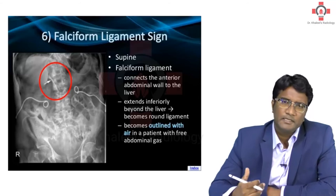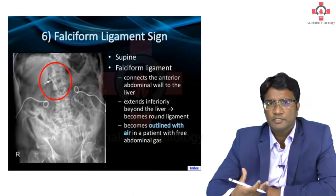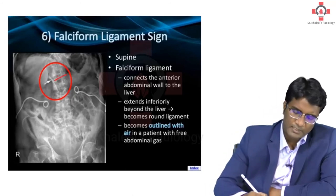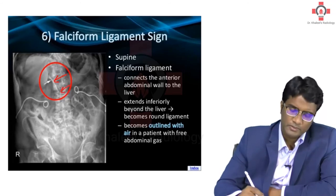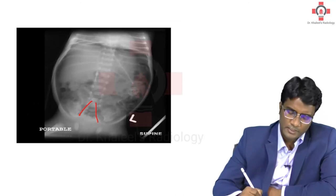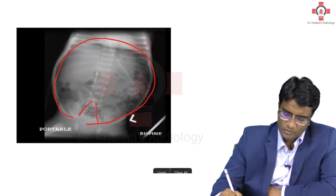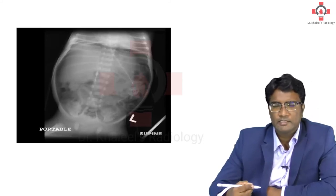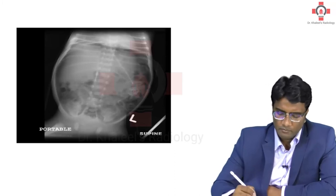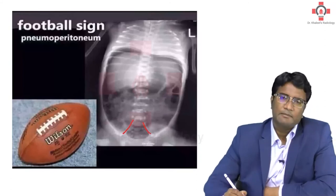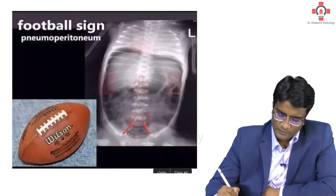What are the other signs seen in pneumoperitoneum? Because there is so much free air in the abdomen, all the ligaments start to become more visible — all the ligaments will have air on either side. You will have the falciform ligament standing out clearly, the ligamentum teres visible clearly, and the umbilical ligaments in an inverted V-shape. You will also see the football sign — the protruding abdomen. Even sometimes you can see the urachus or the median umbilical ligament. This is the football sign, and this is the umbilical ligament sign or inverted V sign.